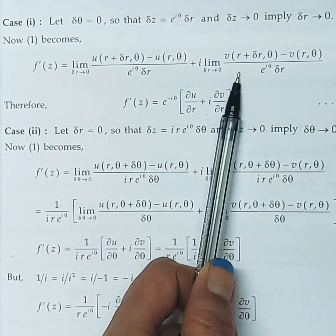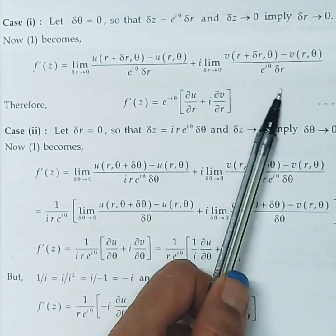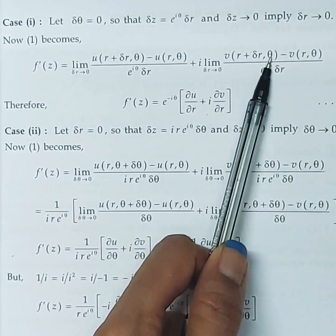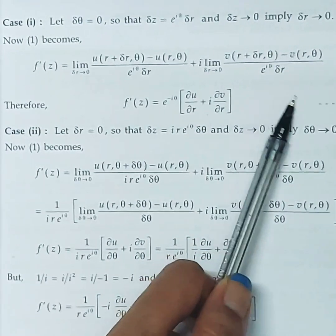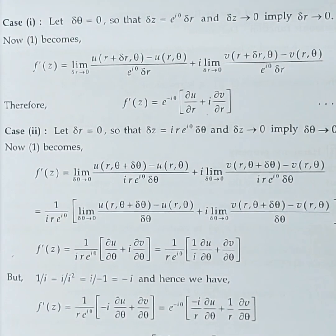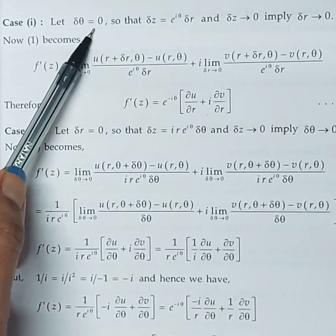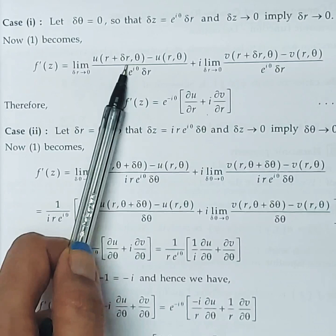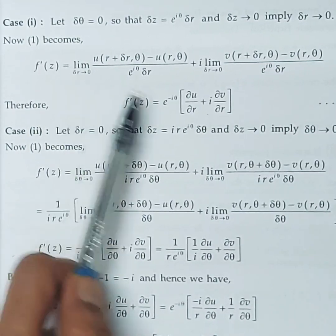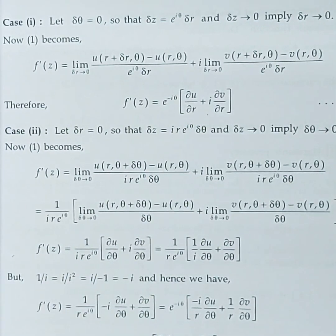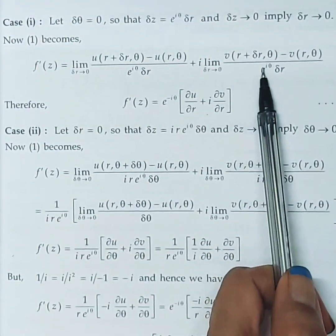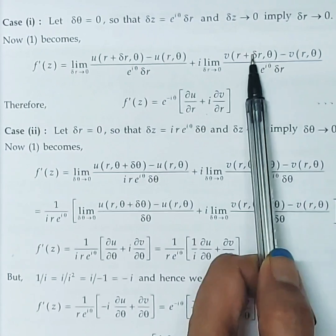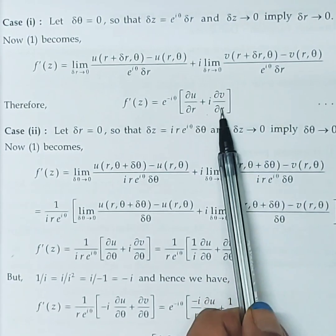Bringing e^{iθ} from denominator to numerator gives e^{-iθ}. The first limit measures a small increment of u with respect to r, which is the basic definition of ∂u/∂r. Similarly, the second limit measures increment in v with respect to r only, since θ is the same, giving ∂v/∂r. So f'(z) = e^{-iθ}·(∂u/∂r + i·∂v/∂r).